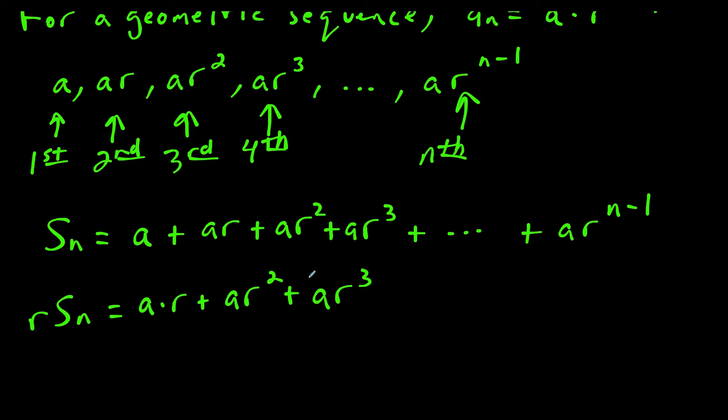So this would be our first, second, third, and our fourth term would be ar to the fourth. So this would continue all the way to the end. And this time, our series would end at ar to the n power. So ar to the n minus 1 would now be the second to last term. And instead of starting at a, this series here would start at a times r.